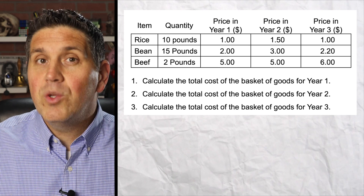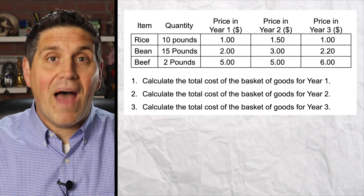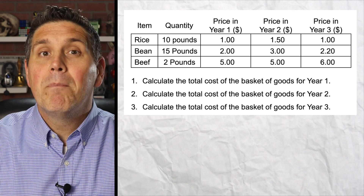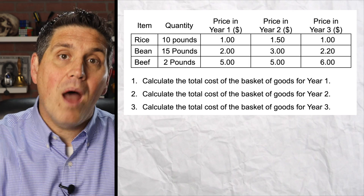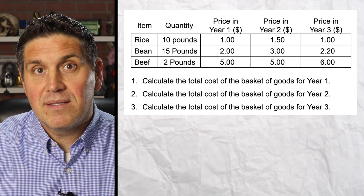Okay, how'd you do? Did you do well? Let's go over the answers. Questions one, two, and three are really easy. You're adding up the value of the market basket for that given year by multiplying the quantity of the items times the price.